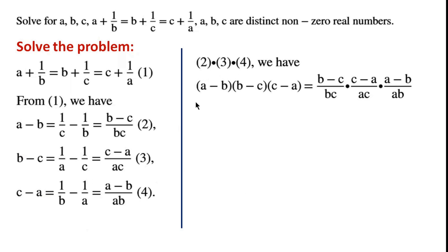On the left-hand side of the equation, we have A minus B times B minus C times C minus A. On the right-hand side of the equation, we have B minus C over BC